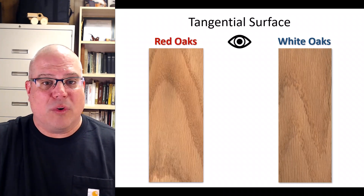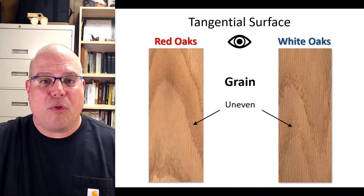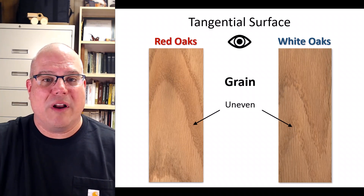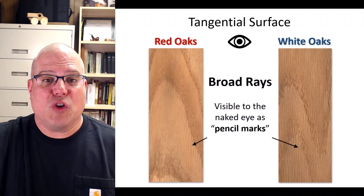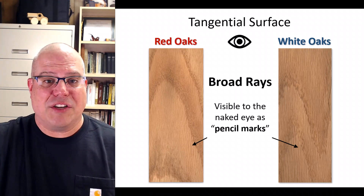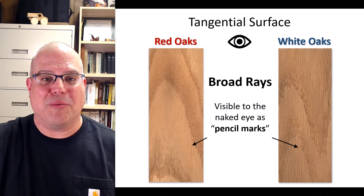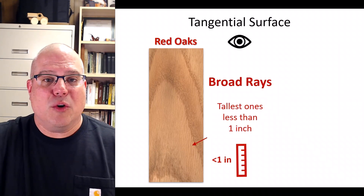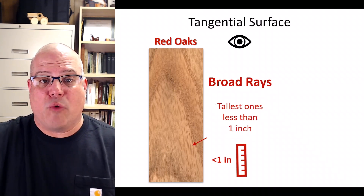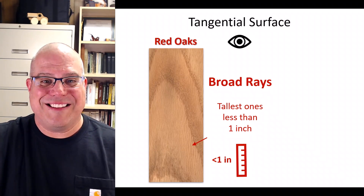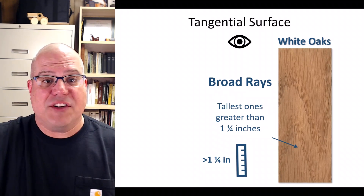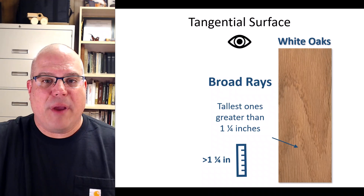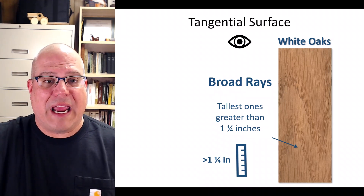Now let's look at some anatomy, starting on the tangential surface. Both oaks have what we call uneven grain — you can clearly see a visual contrast between the early wood and the late wood. Both oaks also have broad rays so big you can see them with your naked eye on the tangential face; they look like someone drew short pencil marks on the wood. You can actually use the height of these broad rays to differentiate red oak from white oak. In red oak, the tallest rays are typically less than one inch. In white oak, the tallest rays are typically more than an inch and a quarter.